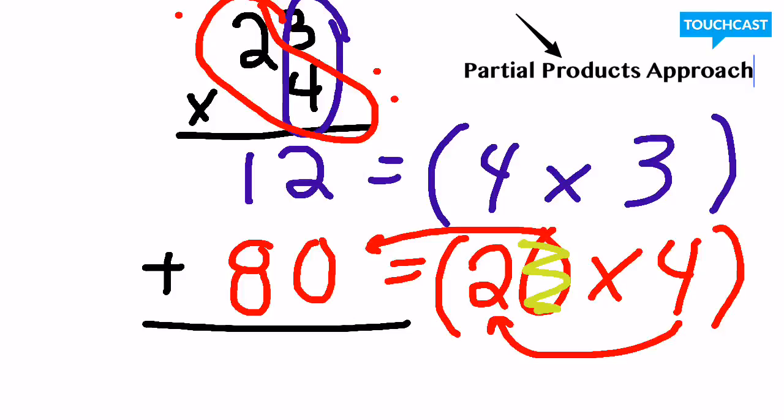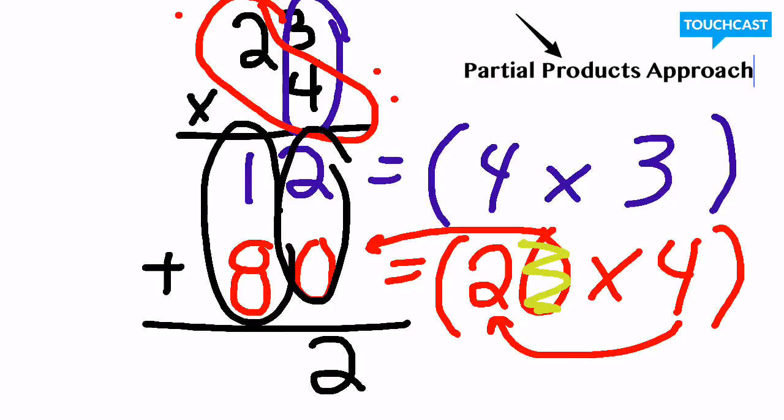My 2 and my 0 gives me a 2. My 8 plus 1, which is really 80 plus 10, gives me a 9 or a 90. And then this gives me my final product of 92.